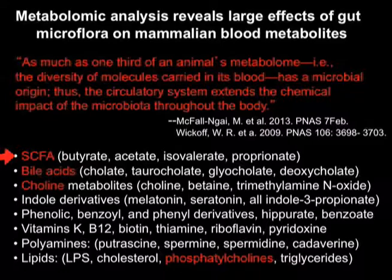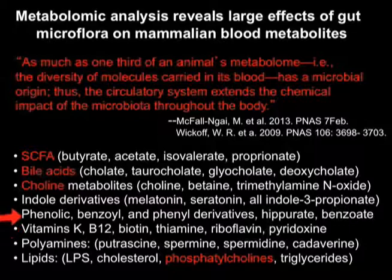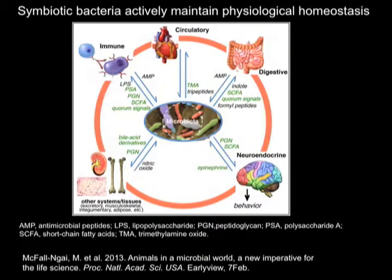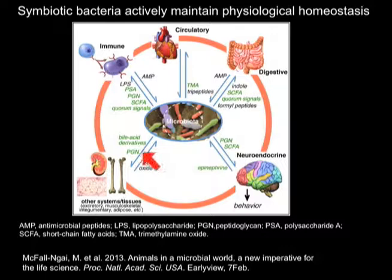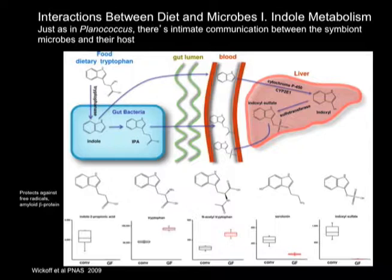Here we have some of the metabolites in our blood: short-chain fatty acids, especially butyrate, bile acids, choline, and of course the vitamins — these are all things that are produced by bacteria. What's in red are things known to cause epigenetic changes. This picture looks at the microbiota as kind of central, supporting the digestive system, circulatory system, and immune system reciprocally. There are reciprocal relationships. It's normative physiology — the microbiota are part of our physiology.